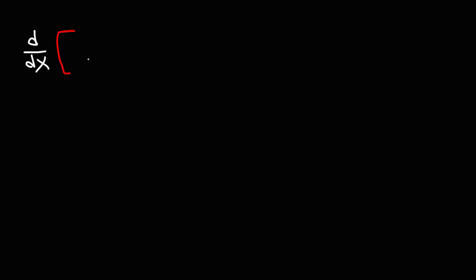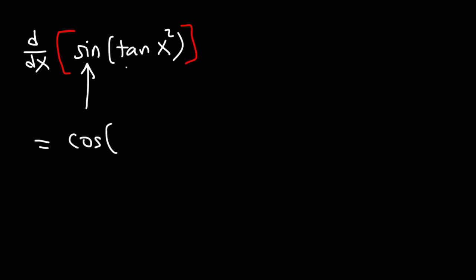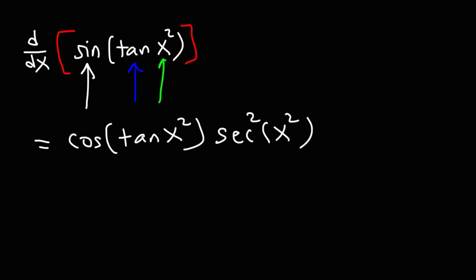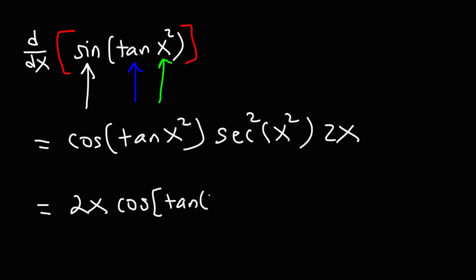What is the derivative of sine of tangent x squared? We begin by differentiating sine — the derivative of sine is cosine, and whatever is inside sine goes inside cosine. Next, the derivative of tangent is secant squared, and the angle of tangent is x squared, so the angle of secant squared will also be x squared. Then the derivative of x squared is 2x. So the final answer is 2x cosine of tangent x squared times secant squared x squared.